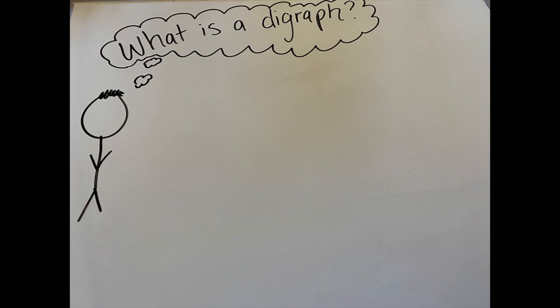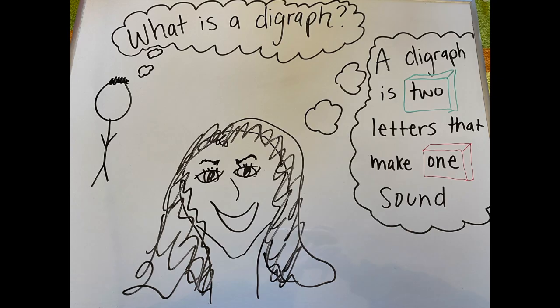What's a digraph? Well, you're in luck because I know what a digraph is. A digraph is two letters that make one sound. A digraph is two letters that make one sound. Let's say it all together: a digraph is two letters that make one sound.